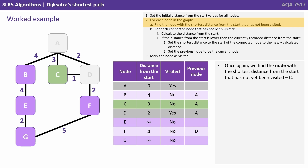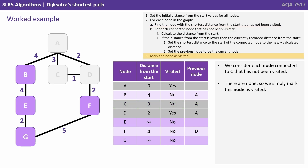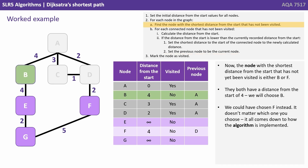Once again we find the node with the shortest distance from the start that's not yet been visited — that's C with a distance of 3. We consider each node connected to C that hasn't been visited. Well there are none, so we simply mark this node as visited. Now the node with the shortest distance from the start that's not yet been visited is either B or F — they both have a distance of 4, so we'll choose B. We could have chosen F instead; it doesn't matter which one you choose, it comes down to how the algorithm is implemented.